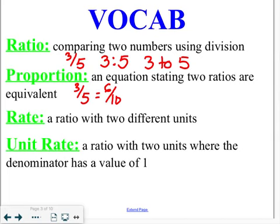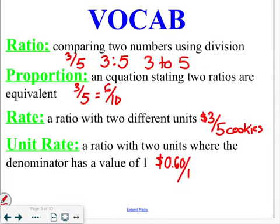A rate is a ratio that uses two different units. So, for example, I could say $3 per 5 cookies. And a unit rate is a ratio with two units where the denominator is 1. So, if I said 60 cents per one cookie. All of these are involving fractions. We're referring to them as ratios.